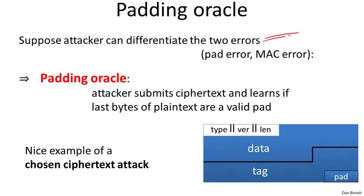Suppose an attacker can differentiate the two types of errors — that is, he can tell if a pad error or a MAC error occurred. The result is what we call a padding oracle. The adversary has a ciphertext it intercepted and wants to decrypt. It submits that ciphertext to the server. The server decrypts it and checks if the pad has the correct format. If the pad doesn't have the correct format, we get one type of error. If the pad has the correct format, it's very likely the MAC will be incorrect, and the adversary will observe a MAC error.